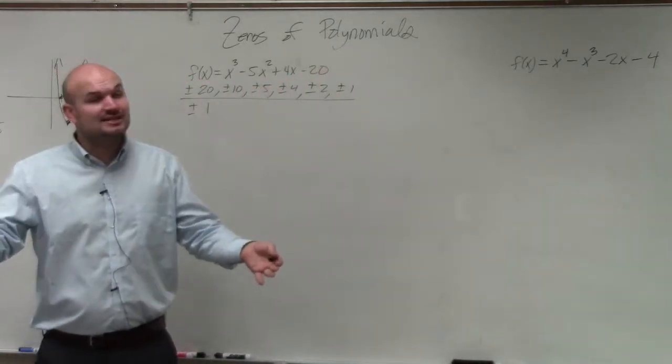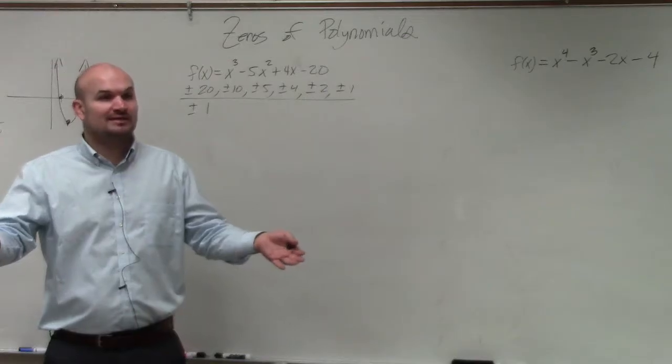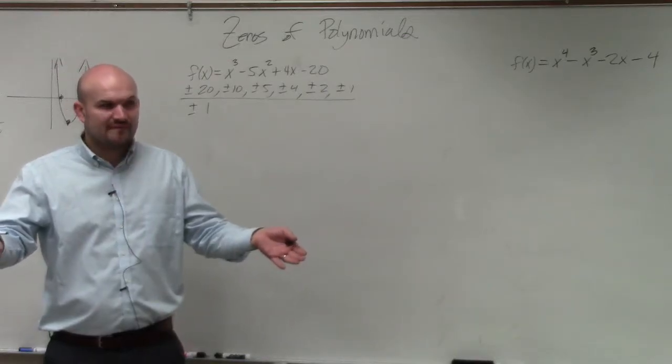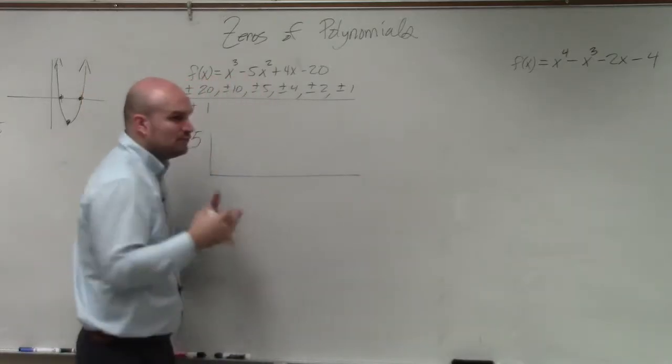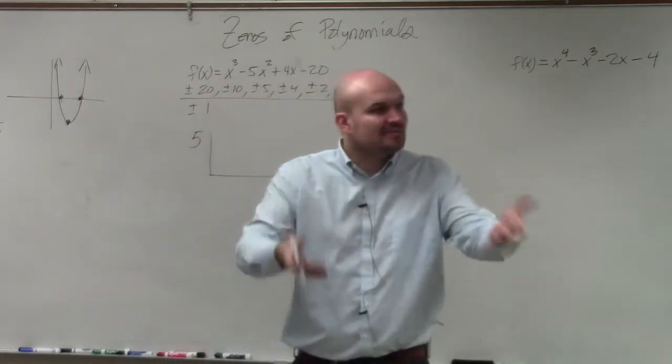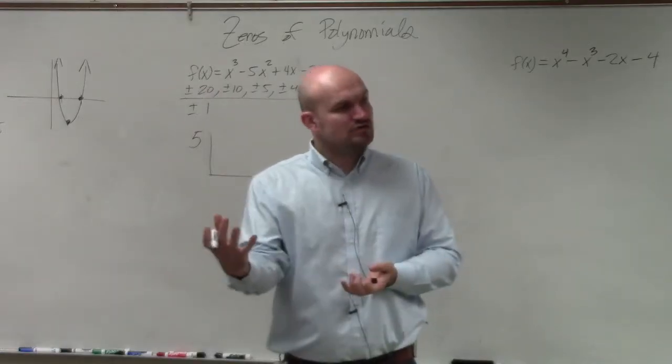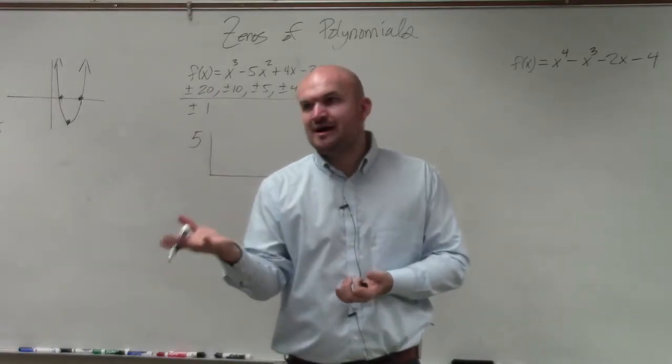Now, when I graph it, I notice that I do have a rational zero, which ended up being 5. So what I can do with that is if I know, if I have a zero, then I can apply division and the quotient is also going to provide me with another factor.